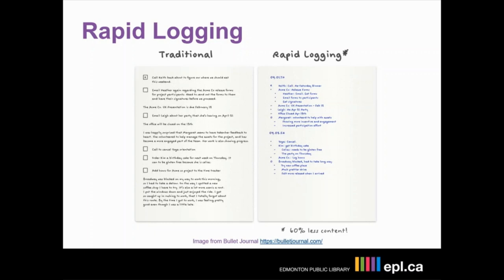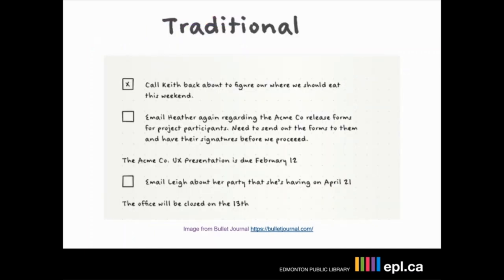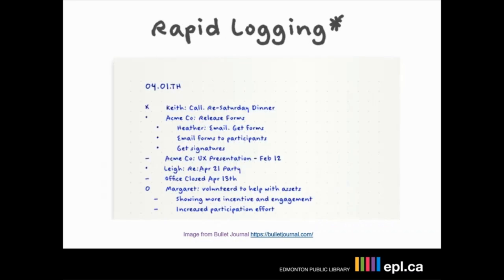Traditionally, you might write: call Keith back about figuring out where we should eat this weekend, email Heather regarding so on and so forth, this thing is due February 12th, the office will be closed on the 13th. This is workable, but it's a little bit harder to parse in a hurry. But if we use rapid logging, we see that we need to call Keith about Saturday dinner, we have all of the tasks related to release forms immediately underneath, and little symbols on the left noting whether something is a task, a note, or an event that happened.